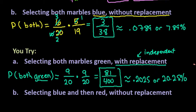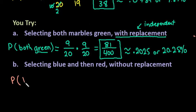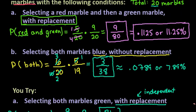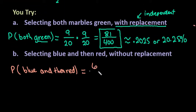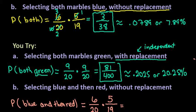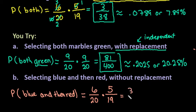For the last one, we're looking at the probability of selecting blue and then red without replacement. The probability of selecting blue first is 6 out of 20, since there are 6 blue marbles. For the second draw being red: since the first marble removed was blue, I still have all 5 red ones, so it's 5 out of 19. This happens to be the same calculation as both being blue, simplifying to 3 out of 38, or 0.0789, or 7.89%.